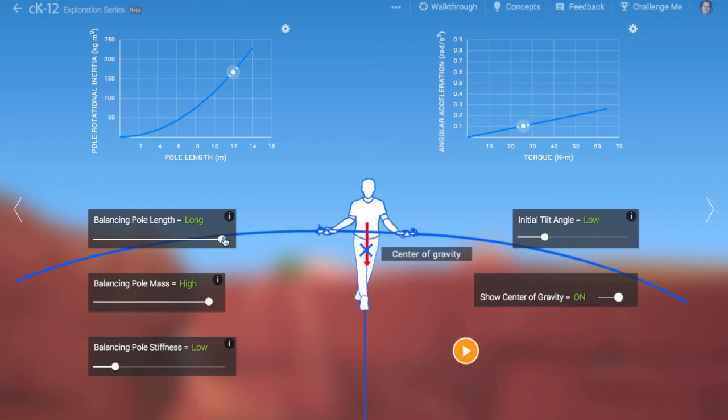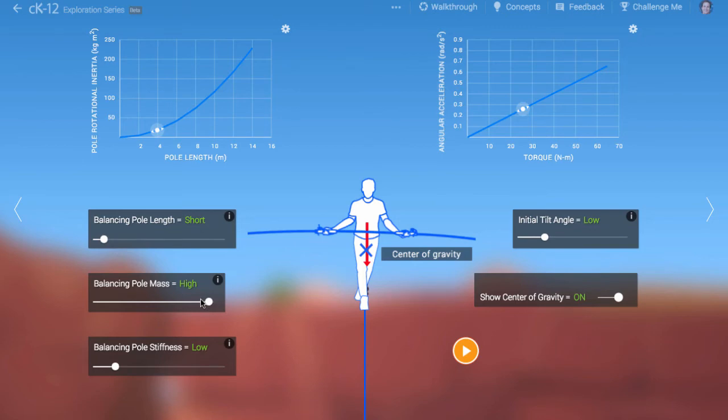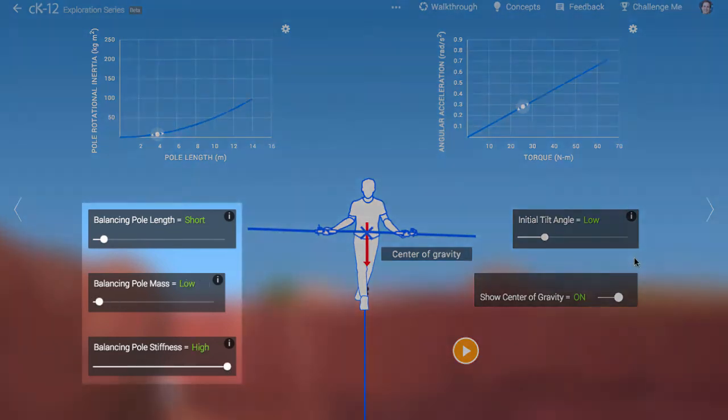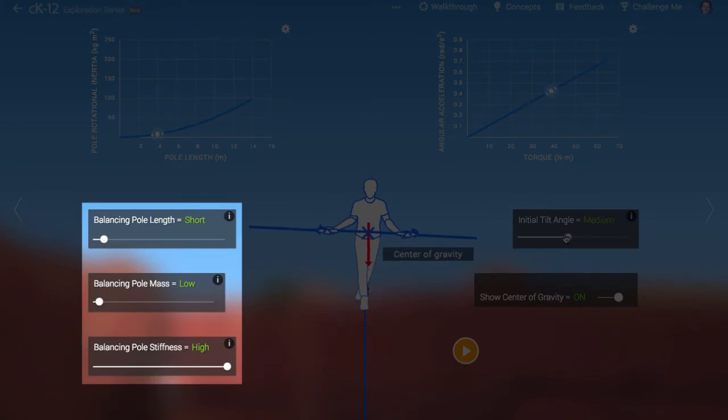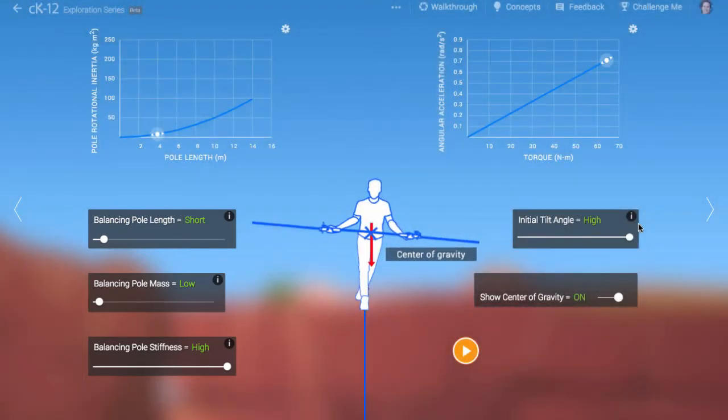Let's look at a worst-case scenario, but don't worry, we won't allow him to fall. We'll just give him a little scare. Let's make the pole as small as possible, as stiff as possible, and as light as possible. Then let's lean him over quite a bit.